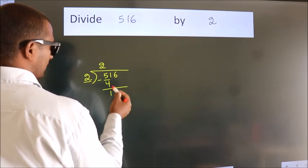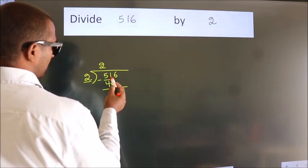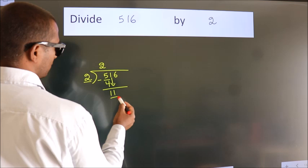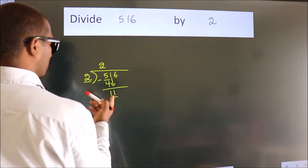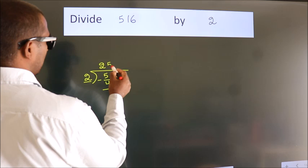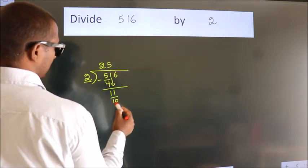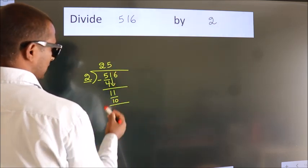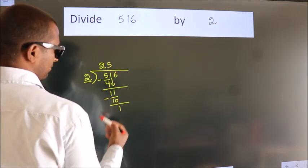After this, bring down the beside number. So 1 down, so 11. A number close to 11 in 2 table is 2 times 5, which equals 10. Now we subtract, we get 1.